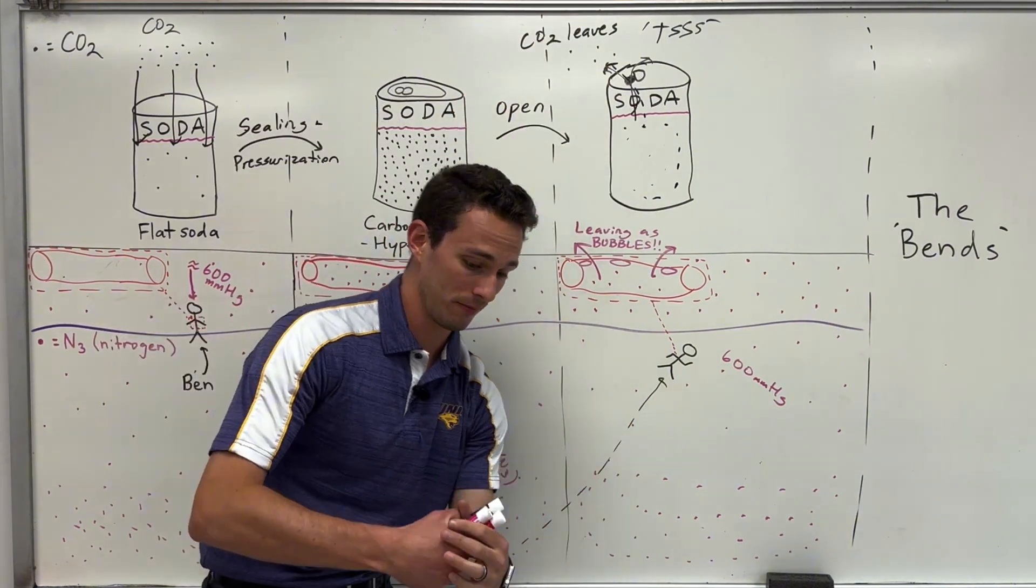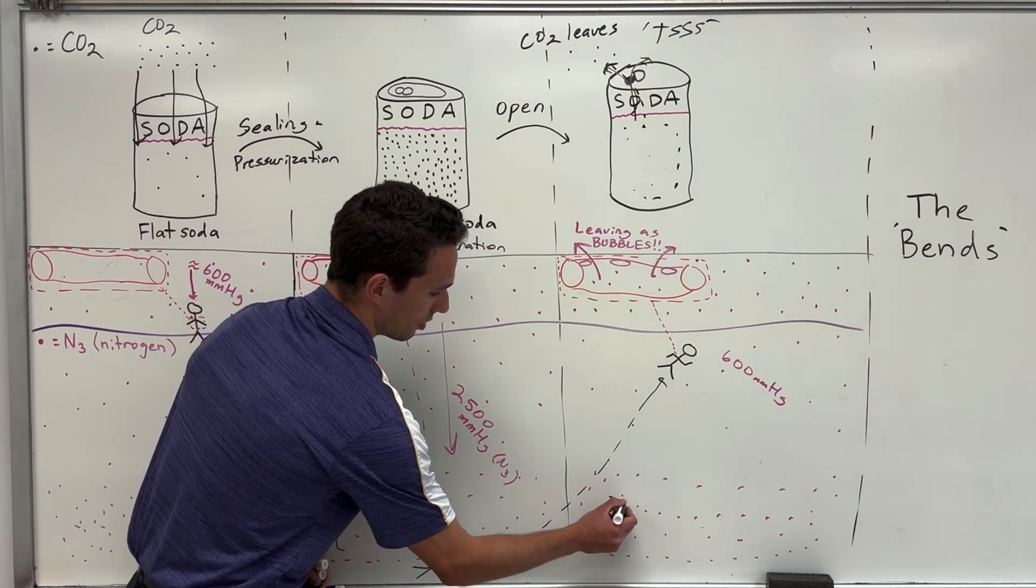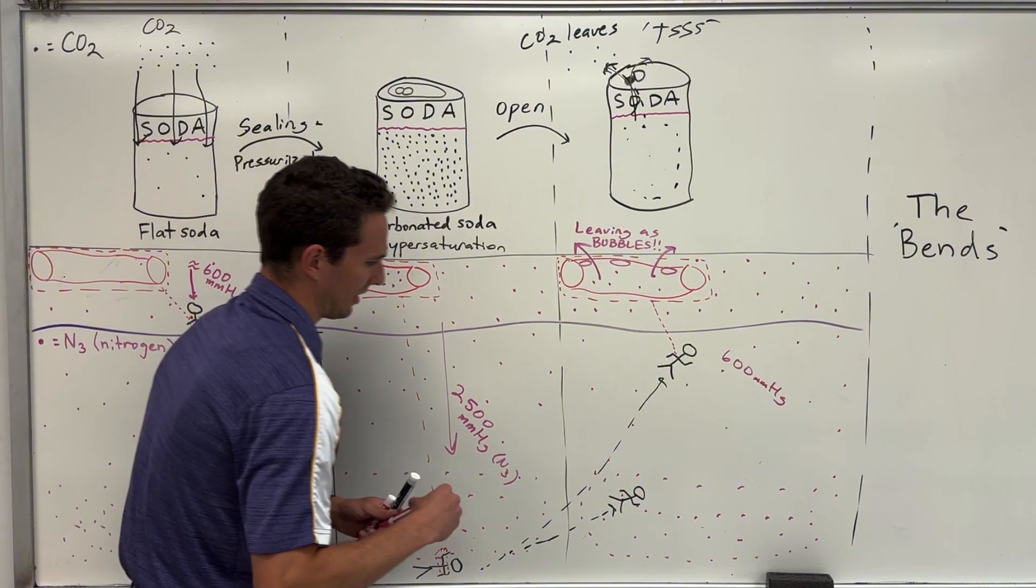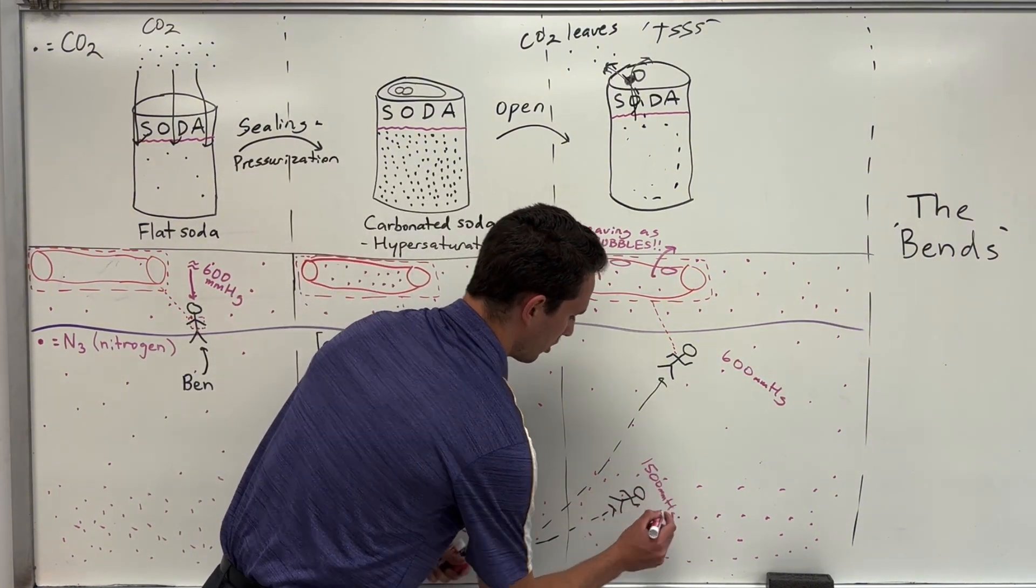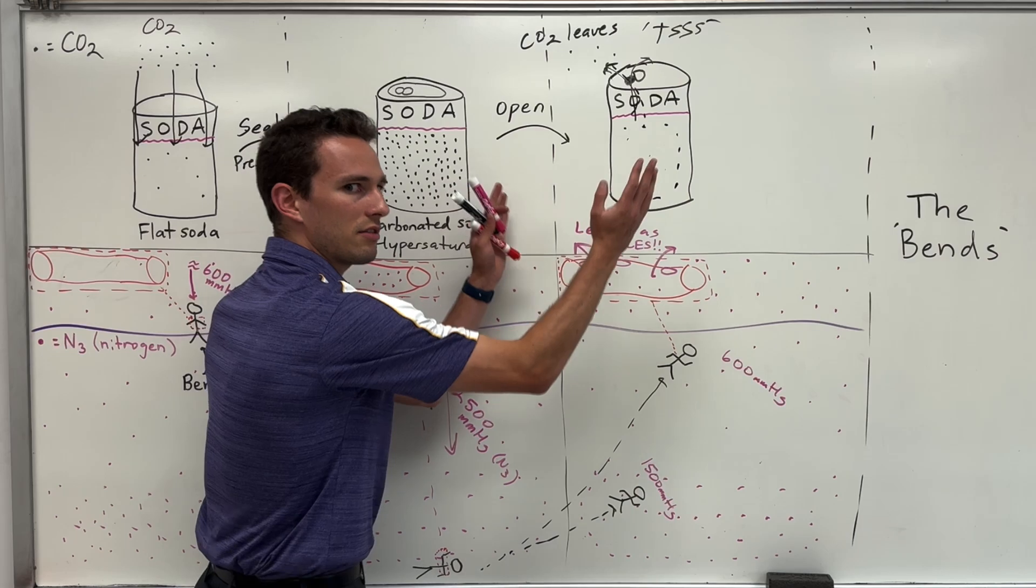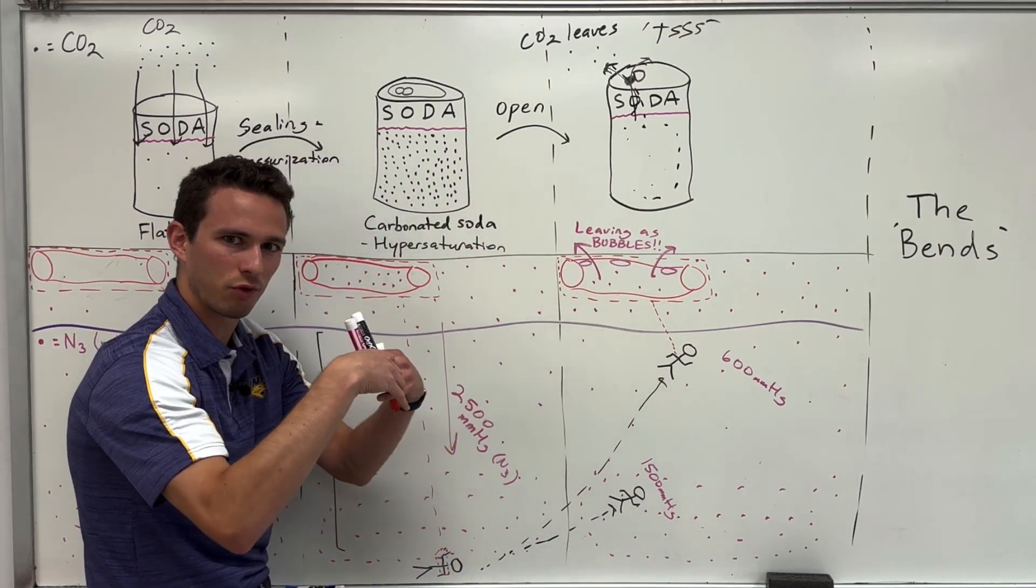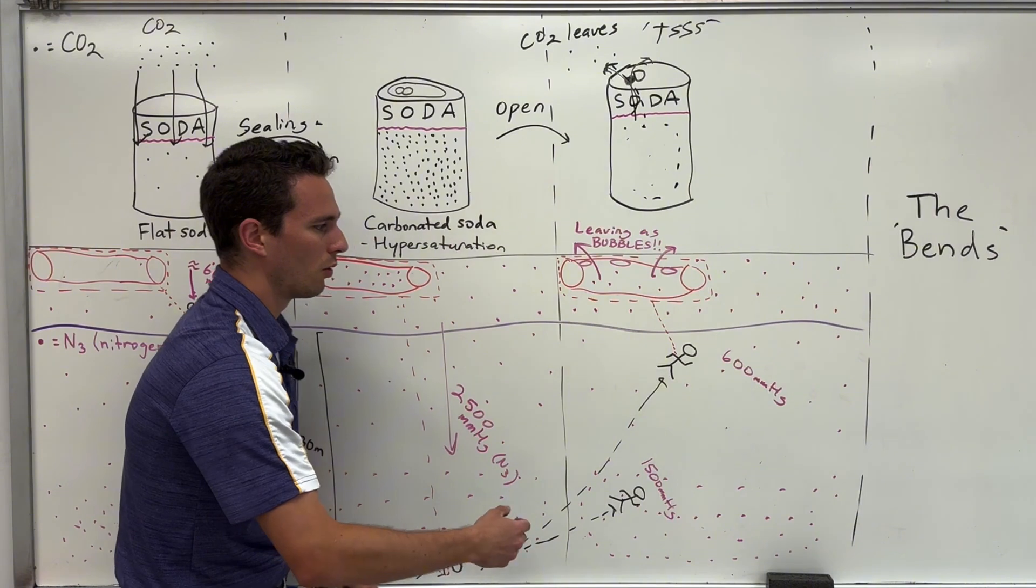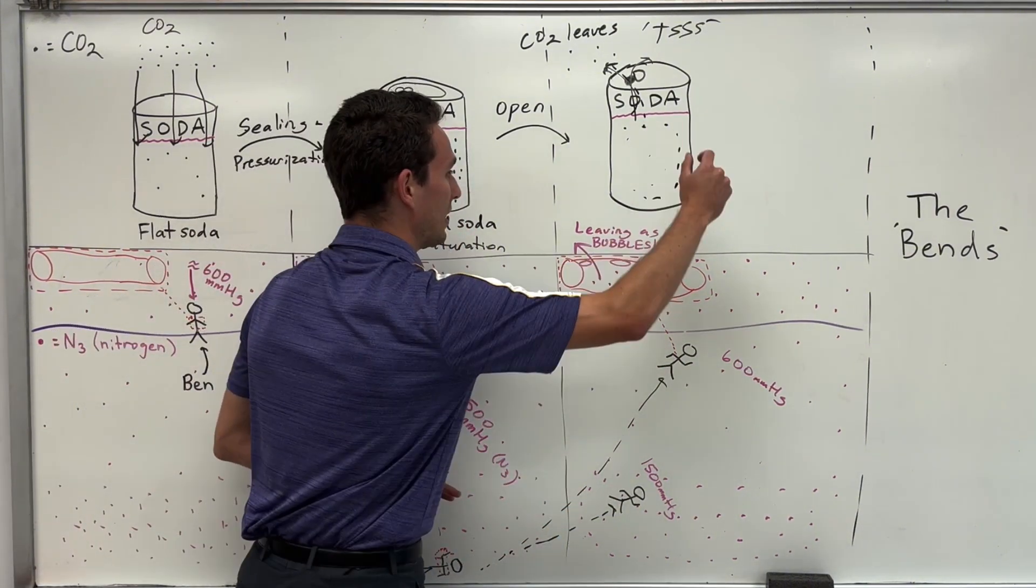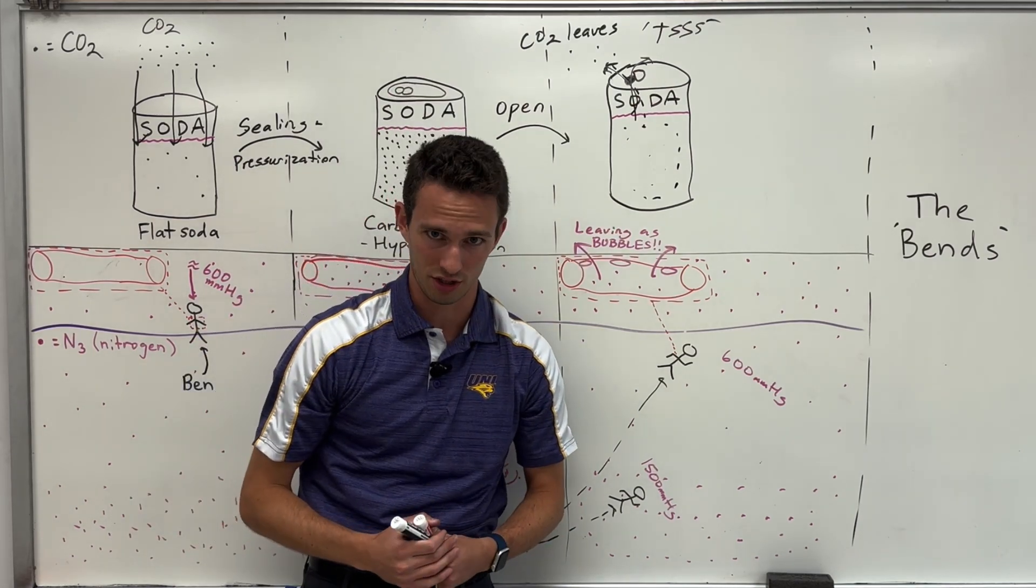So what Ben should do is that he should have swam to, say, here first. Because then the pressure will still be relatively high. We'll say it's at, like, 1,500. And that will allow the nitrogen gas to slowly leave his bloodstream, not as bubbles, but it leaves slow enough where it doesn't form these big pockets of gas bubbles. Whereas if he went straight up, all of that gas that was compressed will leave immediately, it'll degas, and he'll bubble his blood and likely suffer from some sort of dangerous stroke.